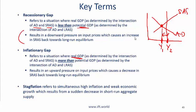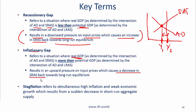A recessionary gap results in downward pressure on input prices, which causes an increase in short run aggregate supply back to long run equilibrium. If there is a recessionary gap, people may be willing to work for less, costs go down, and the short run aggregate supply curve shifts to the right — in theory, pulling the economy out of recession. An inflationary gap results in upward pressure on input prices, which causes a decrease in short run aggregate supply back towards long run equilibrium. Stagflation refers to simultaneous high inflation and weak economic growth resulting from a sudden decrease in short run aggregate supply.